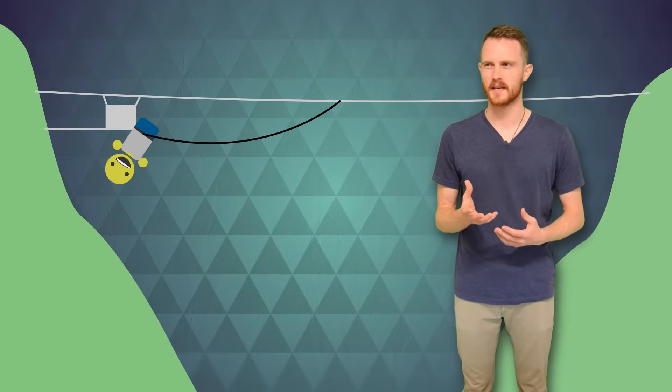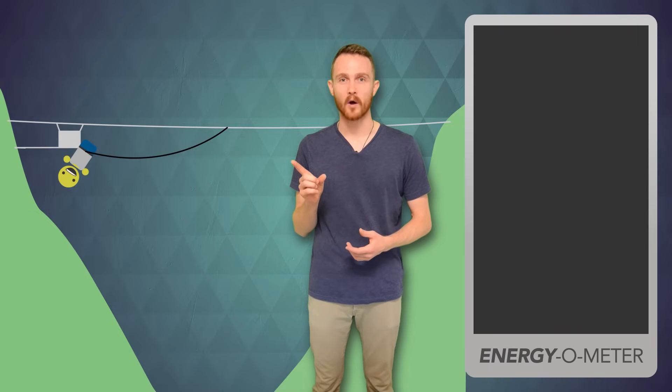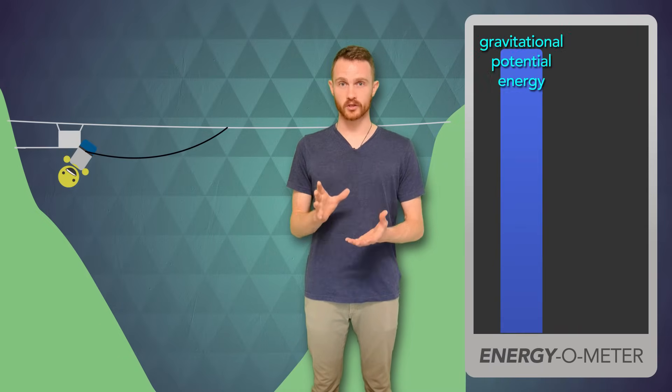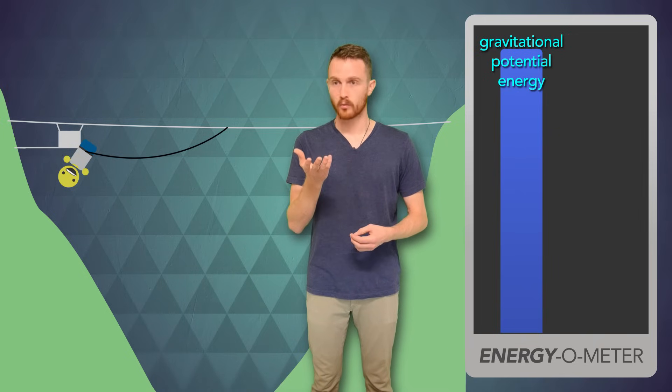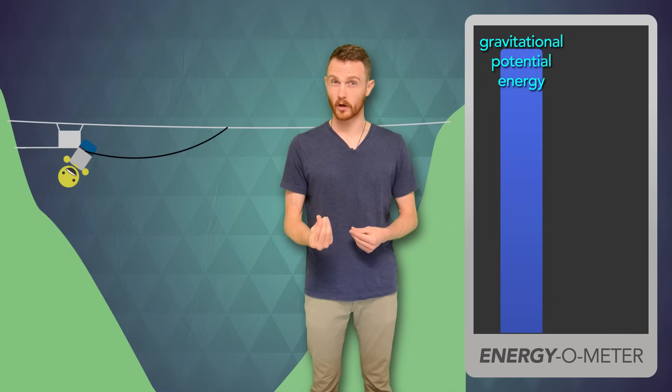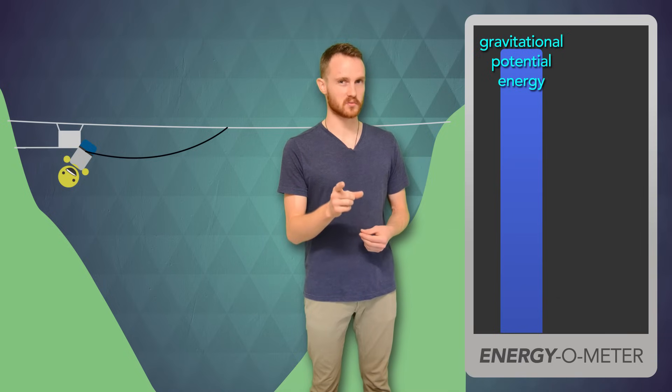It takes a lot of energy to move something that fast. But where is that energy coming from? Well here, at the top, I have what is called gravitational potential energy. I'm located above the earth, which has a strong gravitational pull on me. I have the potential to move.